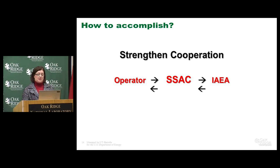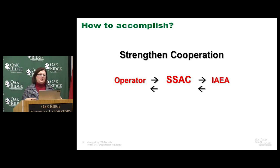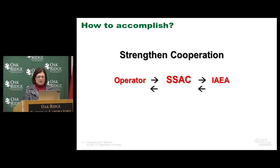So here's the line that needs to be strengthened. The operator talks to the SSAC, who talks to the IAEA, and then the IAEA talks to the SSAC, who talks to the operator. In the regional system, you have operator, SSAC, and the regional system between the SSAC and the IAEA. The SSAC would talk to the operator and then report to the RSAC. It seems like one more step, but the fact that these regional systems are located in the region makes a lot of difference in strengthening communication.